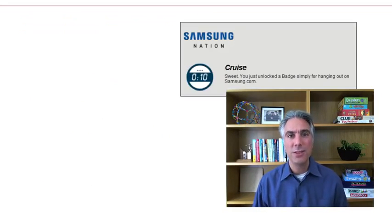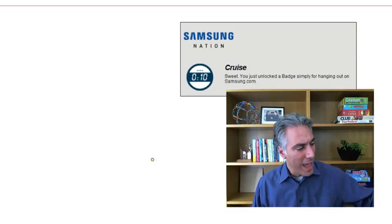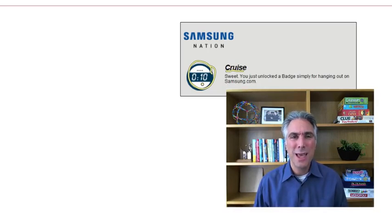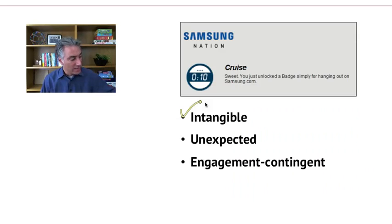The first couple examples come from the Samsung nation site. Here's a badge that you get. It's called the cruise badge that you get for hanging out on the site. Certain amount of time you spend on the site. You show up to the site, and as far as you're concerned, you just are there. And this badge pops up after a certain amount of time. The Samsung nation cruise badge is intangible, just a badge. It's unexpected. It's something that just pops up when you spend a little time on the site. This is something that Samsung puts in to give you a little surprise reward and get you engaged in the whole badge structure.